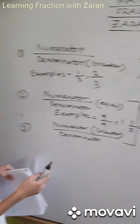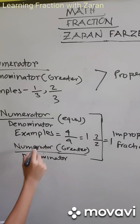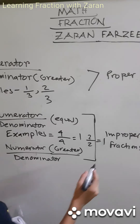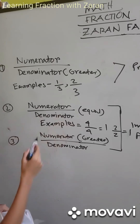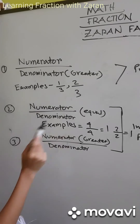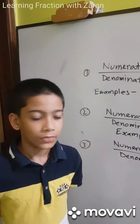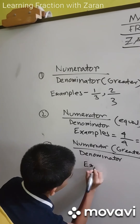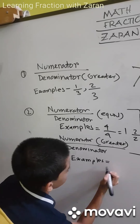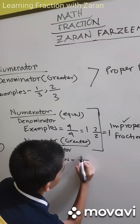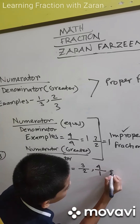The third type is when the numerator is greater than the denominator — this will also be an improper fraction. So if the numerator and denominator are equal, or if the numerator is greater than the denominator, both cases are improper fractions. For example, 3 by 2, 4 by 1, etc.